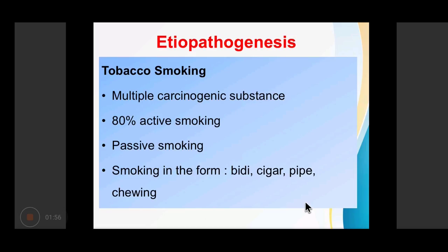The etiopathogenesis of bronchogenic carcinomas includes tobacco smoking, occupational and industrial hazards, air pollution, genetic factors, and scarring.